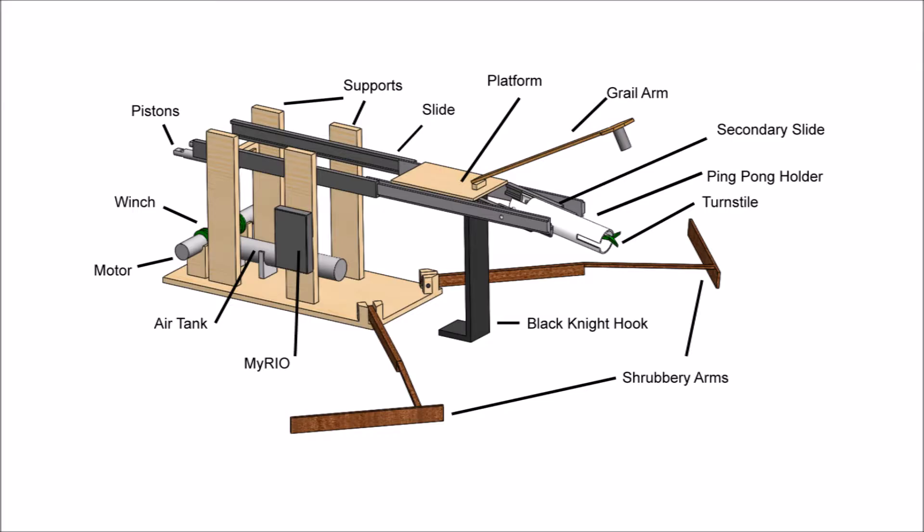This design features a grail arm mounted to the platform on top of the slide. The arm has a suction cup at the end that inserts into the grail and grips it, allowing the machine to pull it into the home zone.